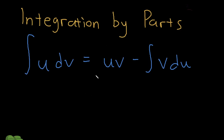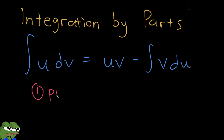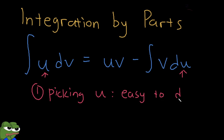Integration by parts is something that lots of calculus 2 students fear, but it's really just filling out a formula. If you have an integral in the form of the integral of u dv, that becomes uv minus the integral of v du. The most important thing is picking your u, because u becomes du, so it needs to be easy to differentiate.